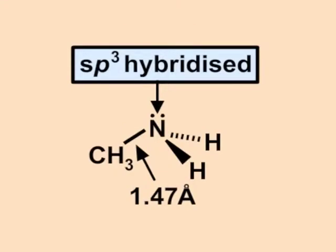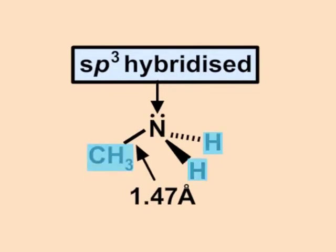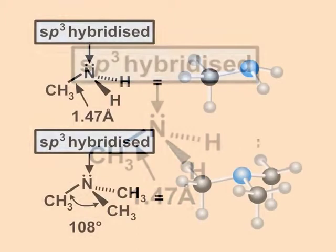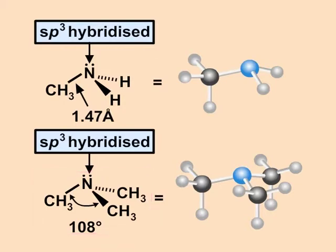Let us now look briefly at the stereochemistry of nitrogen. Nitrogen uses sp3 orbitals which are directed to the corners of a tetrahedron as shown on the screen. Three of these orbitals overlap with s orbitals of hydrogen or carbon, and the fourth contains an unshared pair of electrons. Amines are like ammonia — pyramidal — with nearly the same bond angles, for example 108 degrees in trimethylamine.